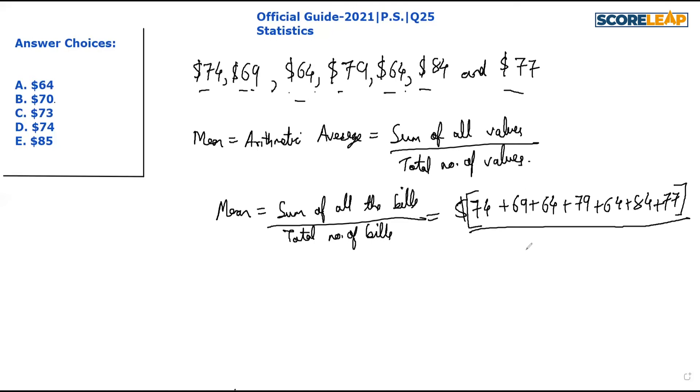Mean or average equals the summation, which will be around $511 divided by seven, which will give us the answer as $72. So our correct answer is option C. I hope it is clear.